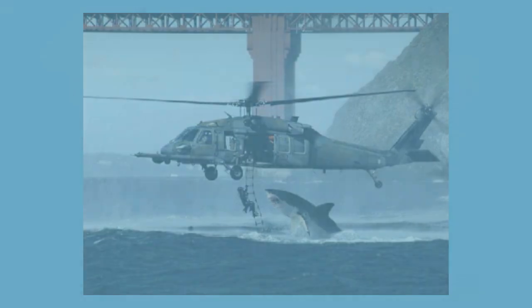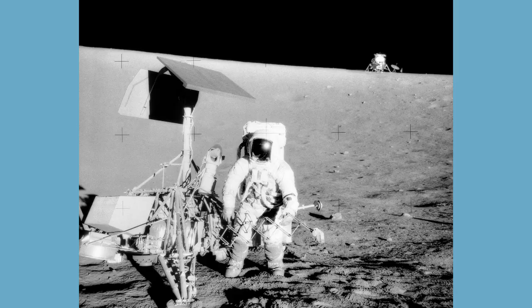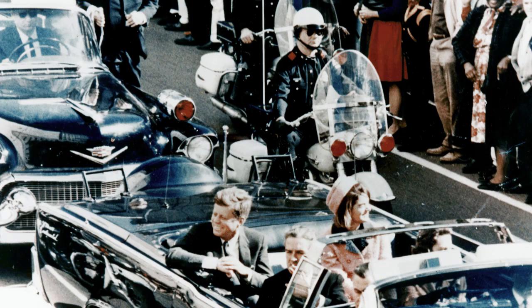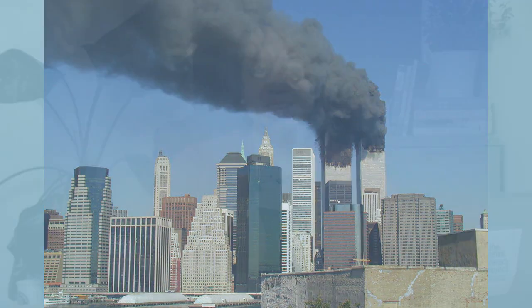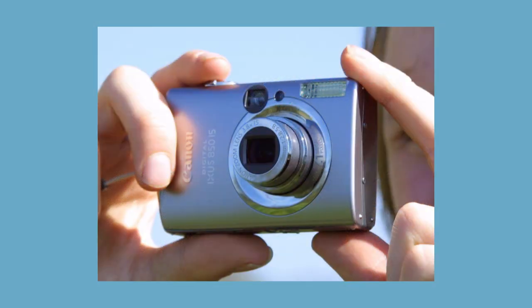Photos can certainly be used to verify that an event did in fact take place. Over the years, photos have helped average people better understand world events, including wars, scientific discoveries, natural disasters, poverty, cultural practices, and countless notable occurrences. In the digital age, we've all become photographers, snapping photographic evidence of the world around us thanks to our cell phones and digital cameras.